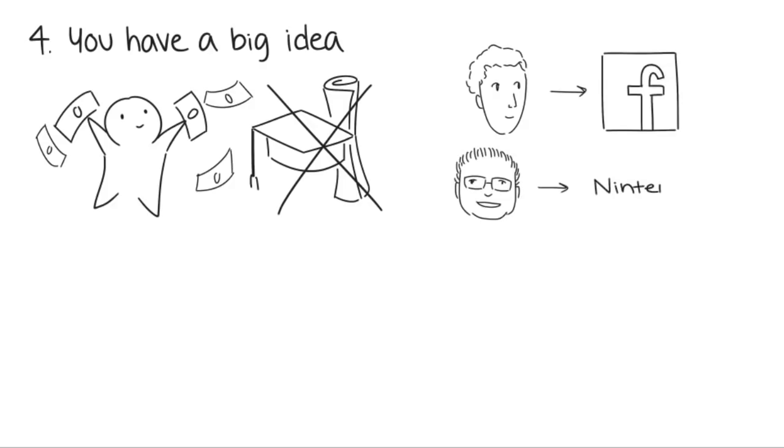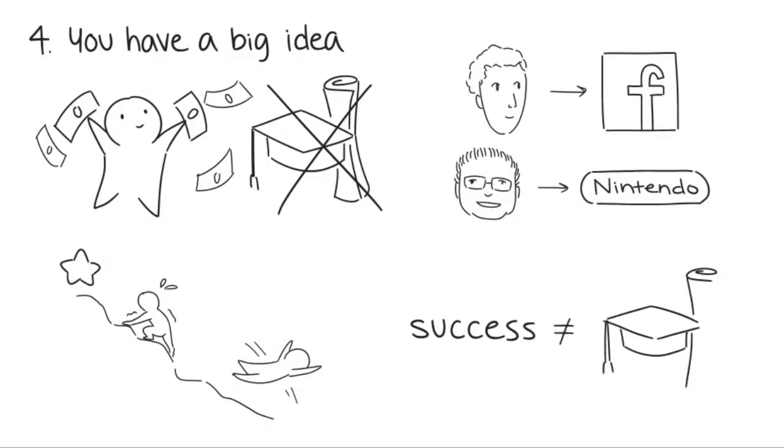the third president of Nintendo, dropped out of Waseda University to take over the family business. Although these people are known for their achievements, there's no doubt they face tremendous struggles and many failures before making the headlines. You can have a plan that doesn't involve school and still be successful.